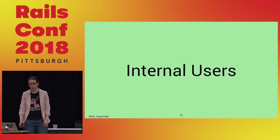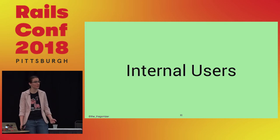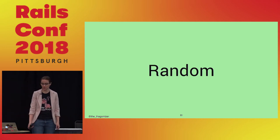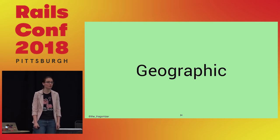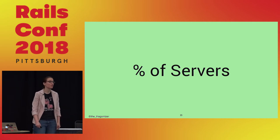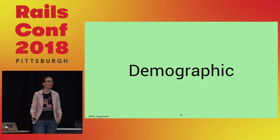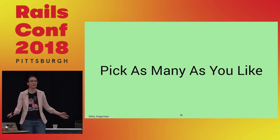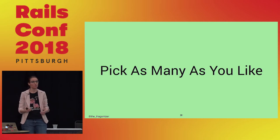How do you choose your canary group? You can use internal users — sometimes called dogfooding. You can choose randomly, or do it geographically: start with a small percentage in US West, then that entire data center, then US East, Europe, Asia. You can do it based on demographic — maybe only new users or power users. You can also ask users to sign up for early access. You can pick any combination. The goal is to start small and roll out gradually to make sure your release isn't toxic.